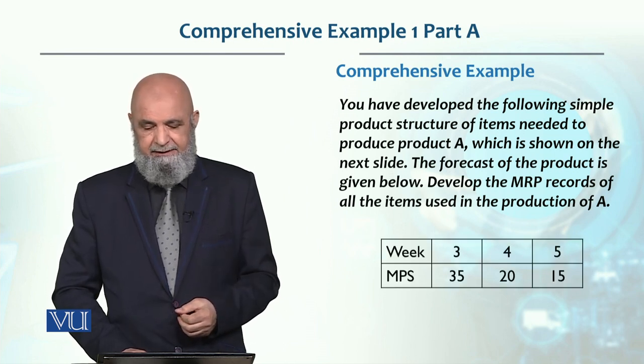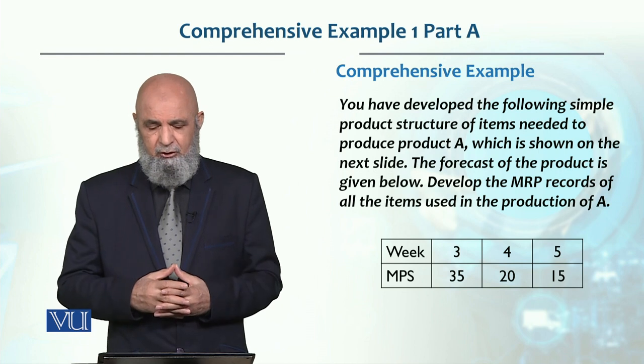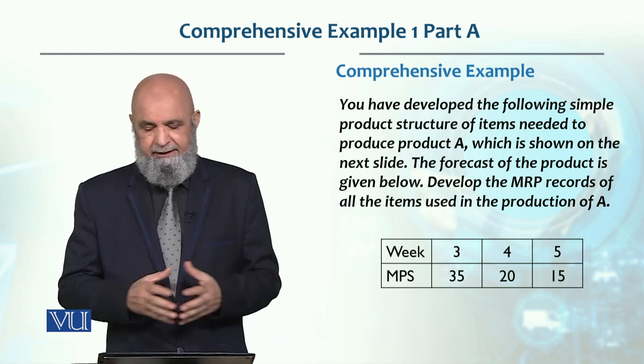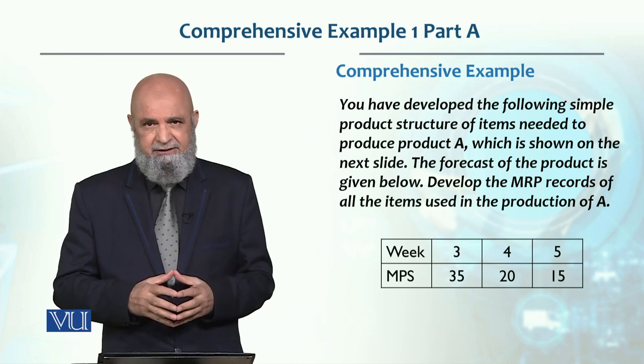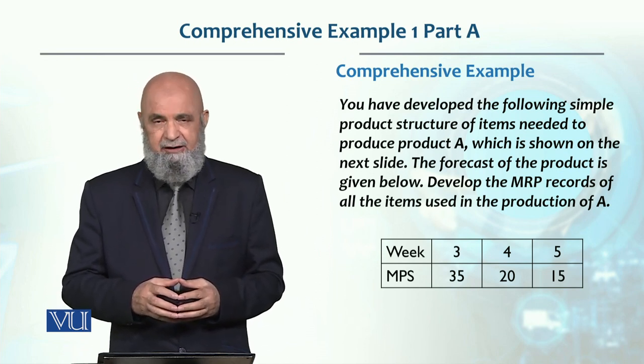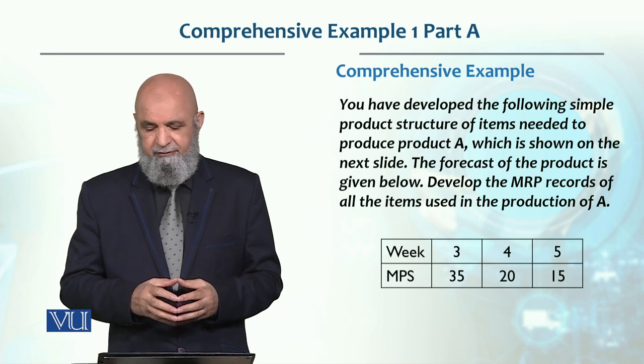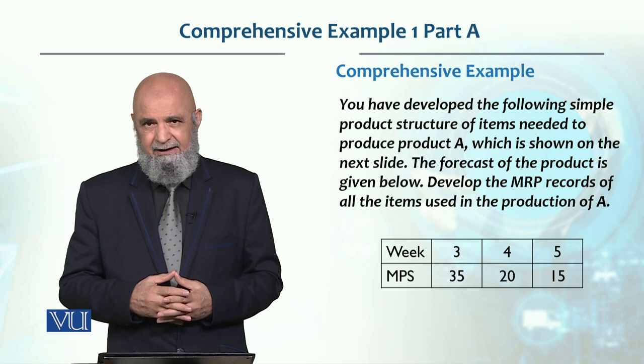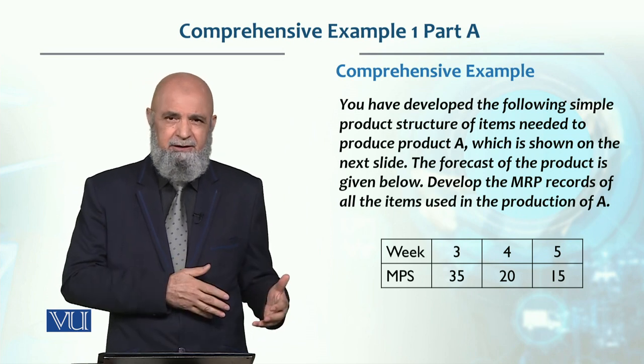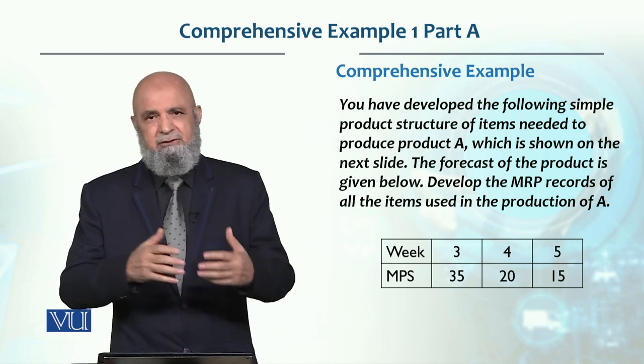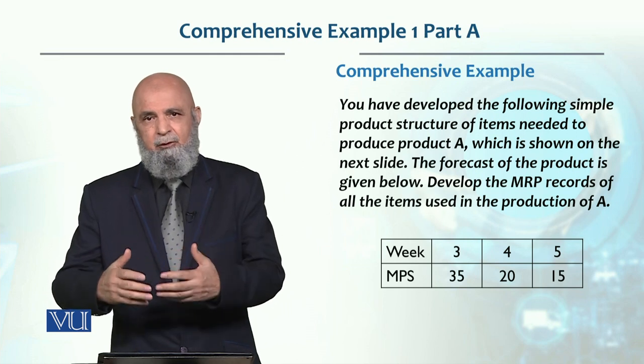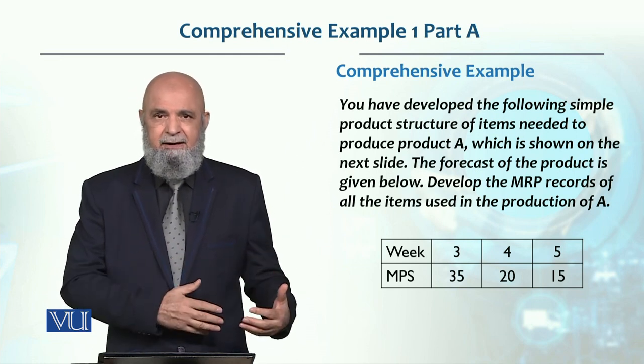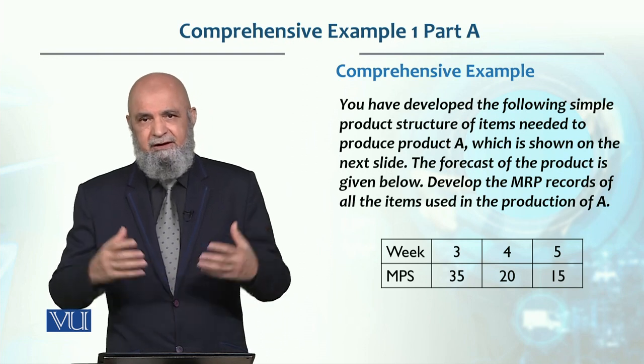Product A is the end product. MRP usually doesn't make this record - it's an MPS record, the Master Production Schedule. MRP is for the end product components and assemblies.